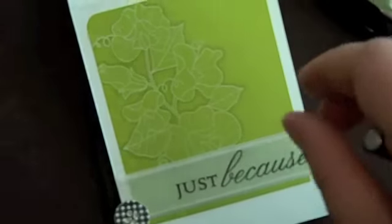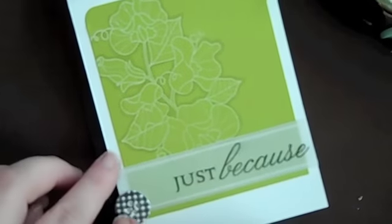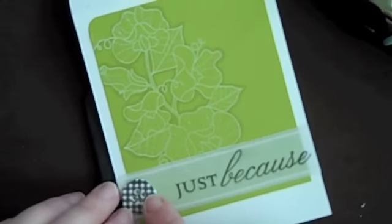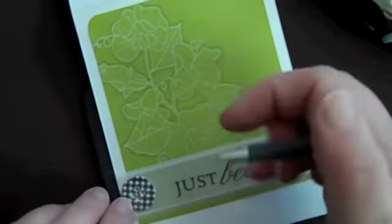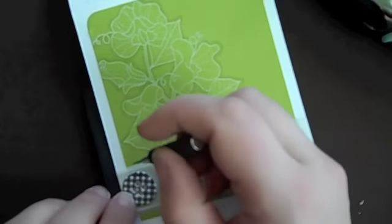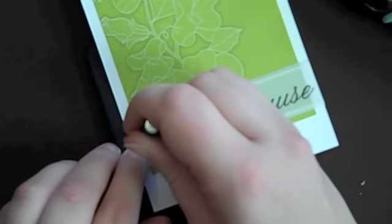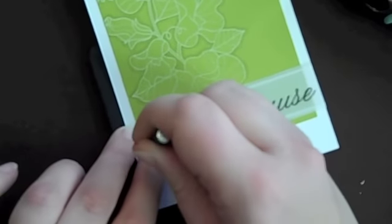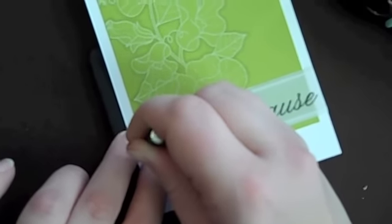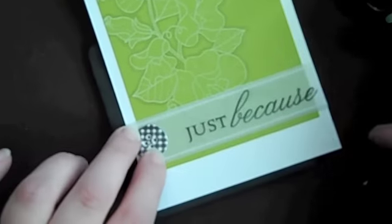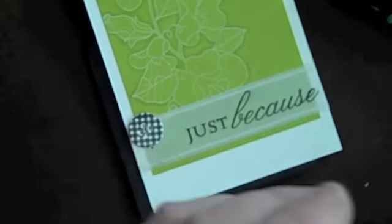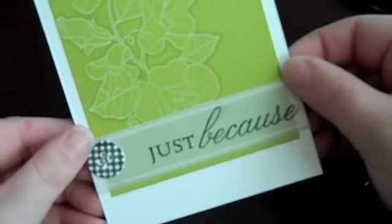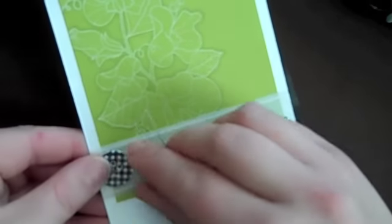Next I'm going to stitch this button in place. When I'm stitching a button on a project, I like to put a piece of foam behind my project and use a paper piercer to pierce directly through the buttonholes where I want the button to be placed on the card. Then I already have the holes readily available to stitch with instead of trying to force my needle through all those layers of paper.